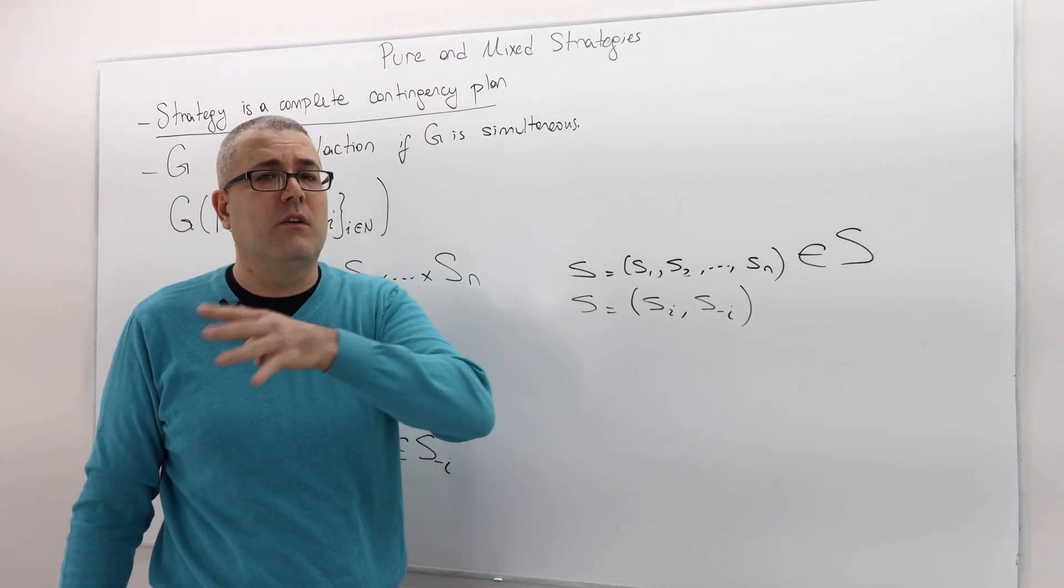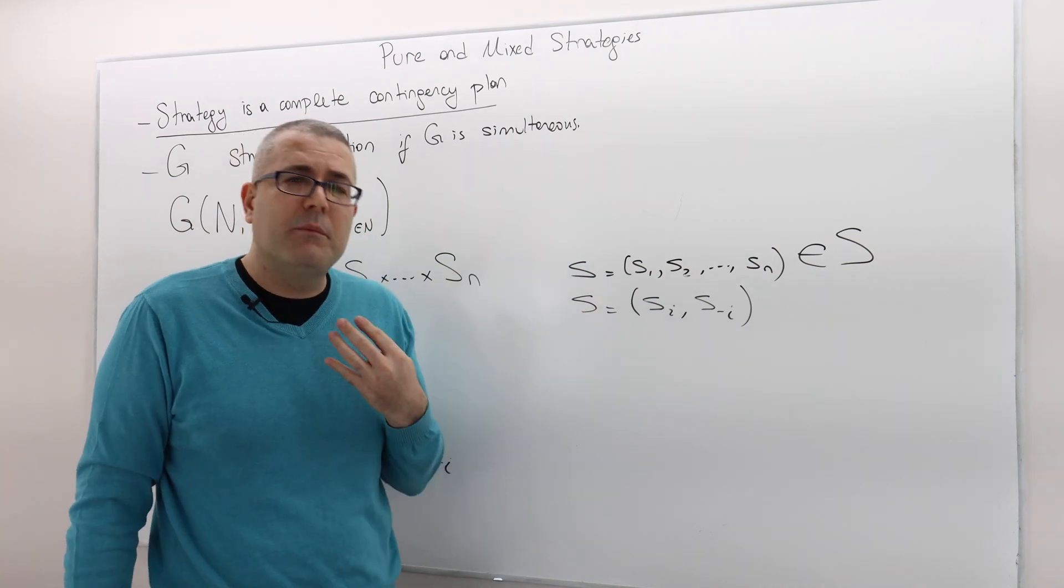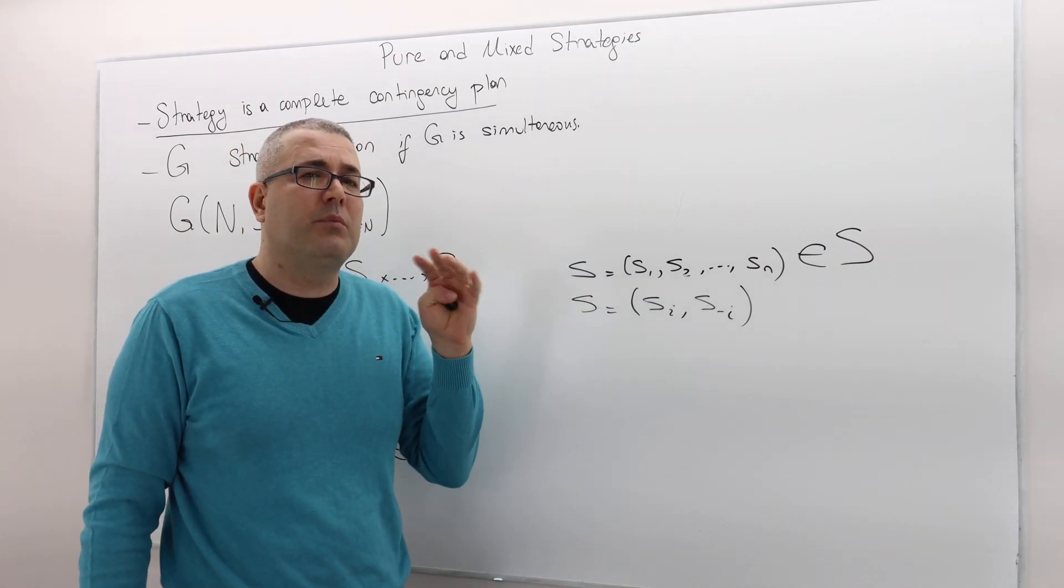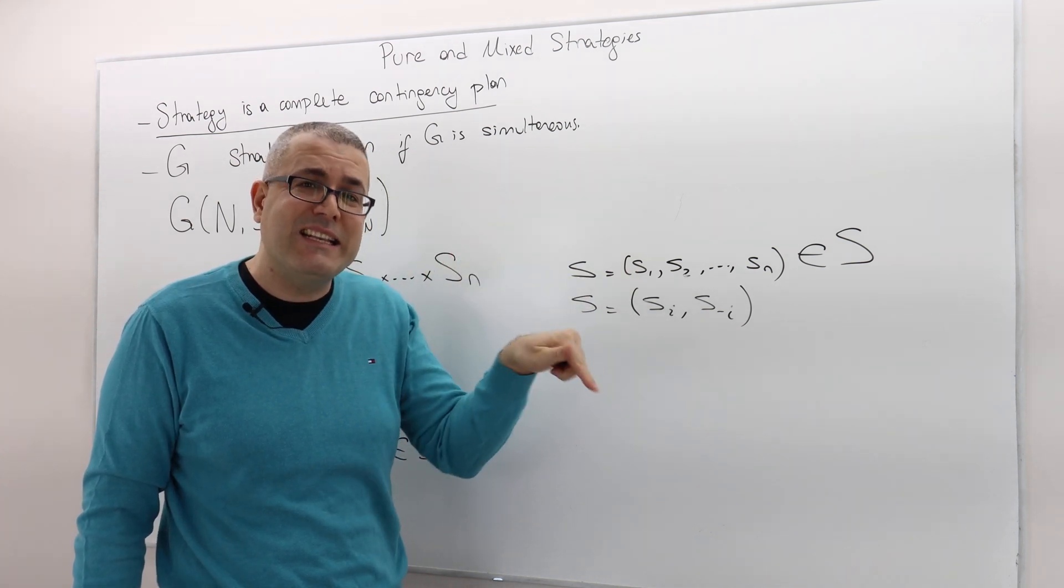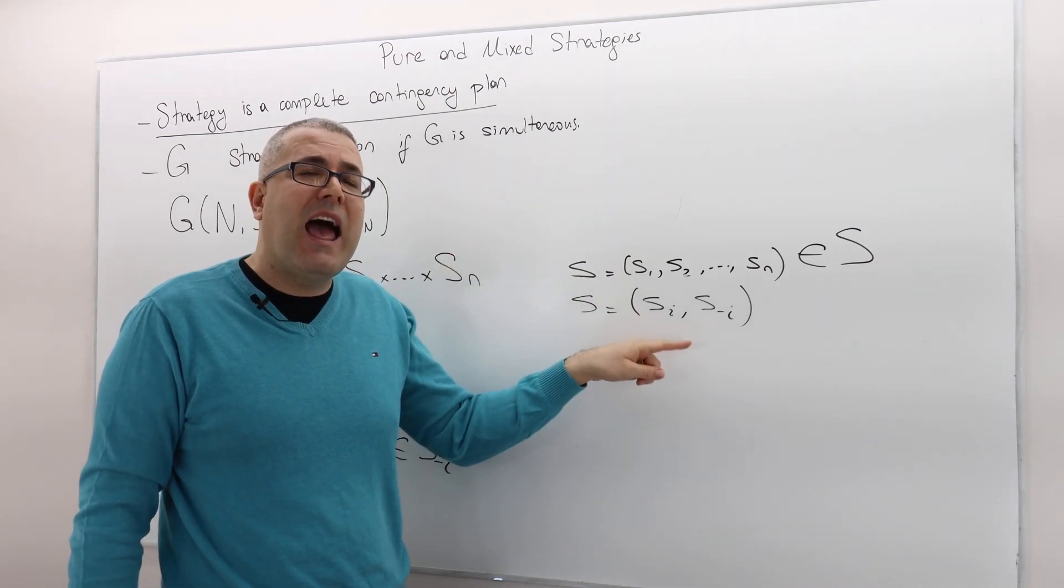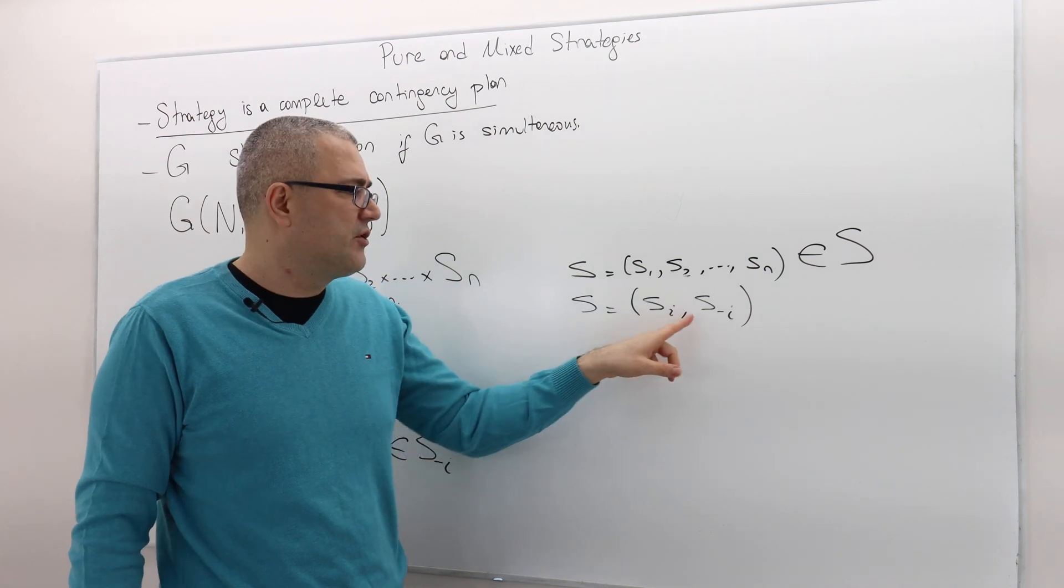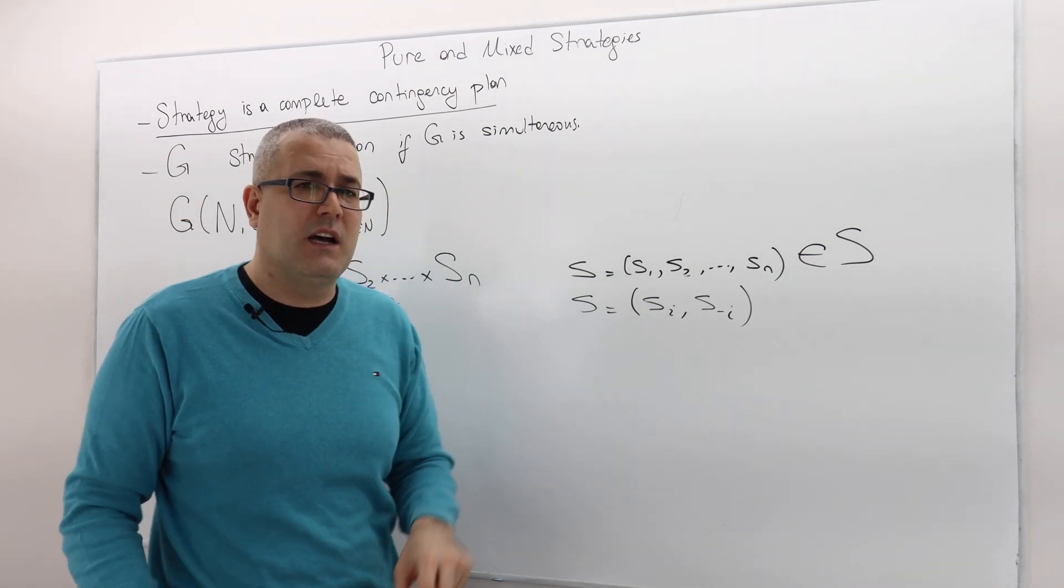They're identical basically means I am, instead of writing this strategy profile in a long way, like S1, S2, S3, all the way up to S_N, what I'm doing is I'm singling out player I, S_I. This is his strategy because I want to talk about his strategy specifically. And then everybody else's strategy is represented by S minus I.